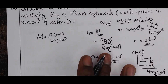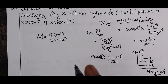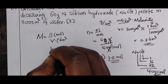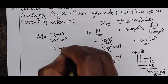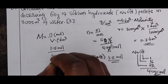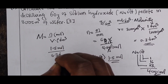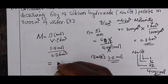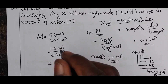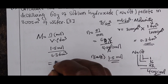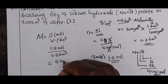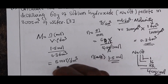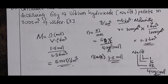Now we calculate the concentration using the formula: concentration equals 1.5 moles divided by 0.3 dm³. Dividing gives 5 moles per dm³. That is the concentration of sodium hydroxide.